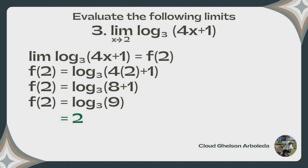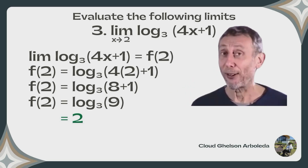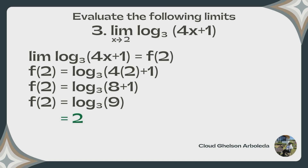Problem 3: the limit of logarithm base 3 of 4x plus 1 as x approaches 2. We substitute 2 into x: f(2) equals log base 3 of 4 times 2 plus 1, which equals log base 3 of 8 plus 1, which is log base 3 of 9. This equals 2, because 3 times 3 equals 9 — we need two 3s to get 9. Therefore, the limit of log base 3 of 4x plus 1 as x approaches 2 is 2.